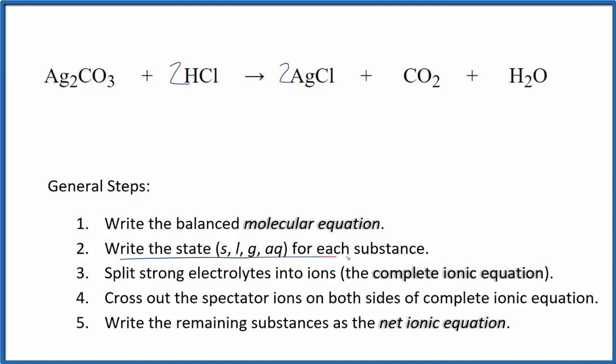Now we can write the state for each substance. That looks like this. If you know your solubility rules, carbonates in general are insoluble, and silver compounds are most often insoluble. So silver carbonate, that's going to be a solid. So we'll start out with solid silver carbonate.